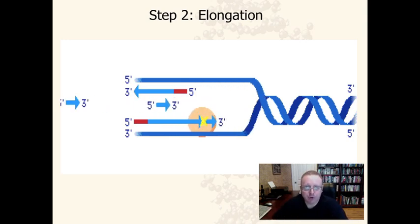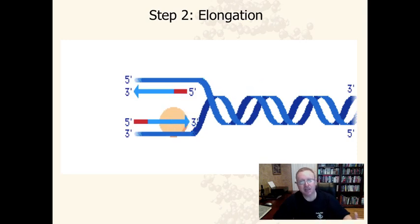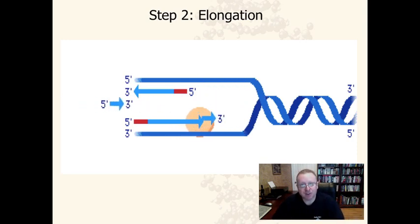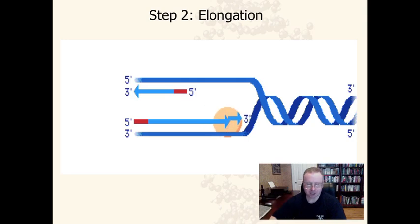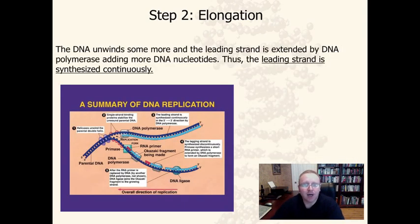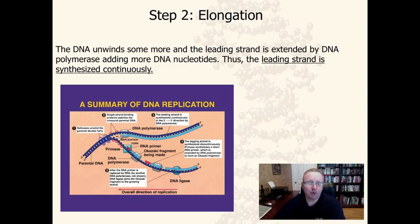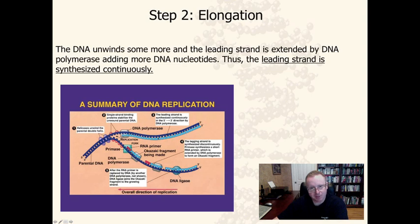As the replication fork extends and new DNA is being added, the leading strand continues continuously because it's moving in the direction of the replication fork. We can see on the summary diagram that DNA polymerase adds DNA continuously on the leading strand with no breaks — it just keeps moving in the same direction as the replication fork opens further.